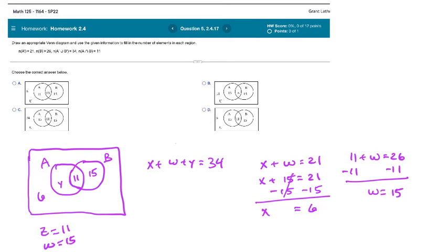Finally, I know the value of X, I know the value of W. X was going to be 6, W was going to be 15, plus Y was 34. 6 and 15 gives us 21, plus Y is 34. If I subtract 21 on both sides, then I get the value 34 minus 21 is going to be 13. For my last variable in my Venn diagram, I have 13.